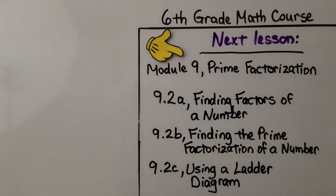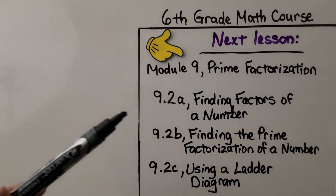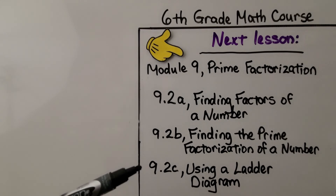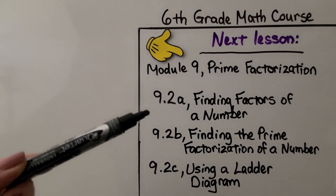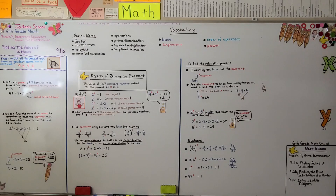Understanding exponents is really going to help you as we go deeper into algebra. We're finished with 9.1 and moving on to 9.2, which is about prime factorization — split into three parts. Our next lesson is finding factors of a number. Keep trying your best. I'm proud of you — have a great day! Bye!